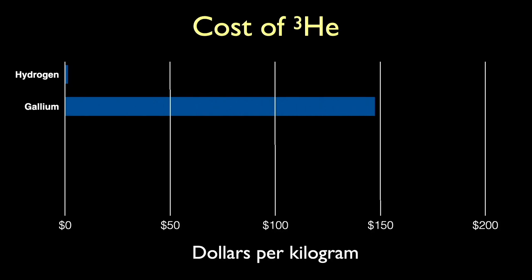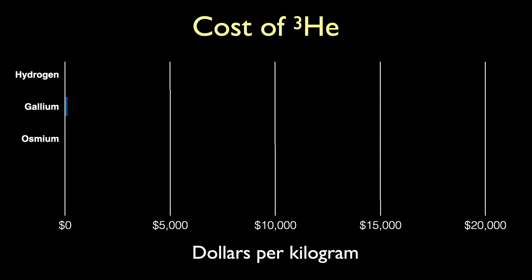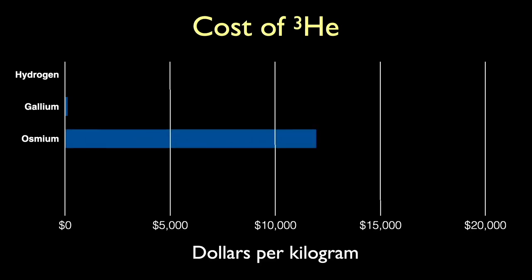Osmium is a rare metal and we have to change our chart range by a factor of 100 again. You can no longer see hydrogen and gallium almost disappears. Osmium is pretty expensive at $12,000 per kilogram.